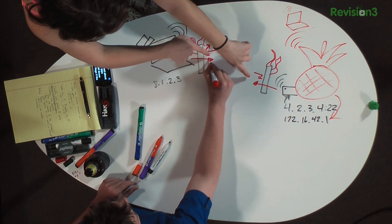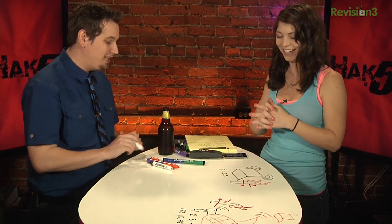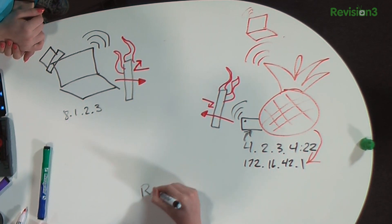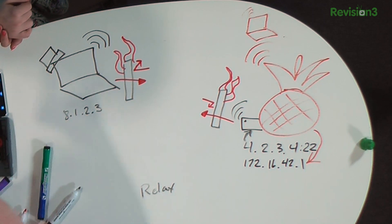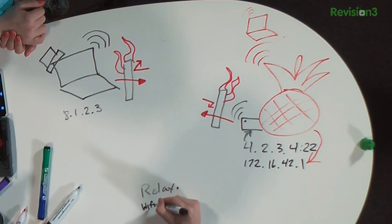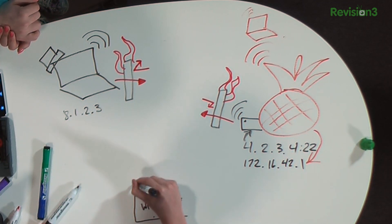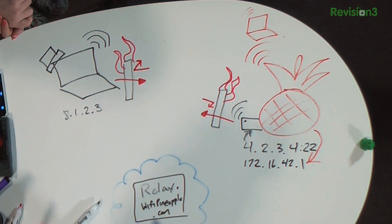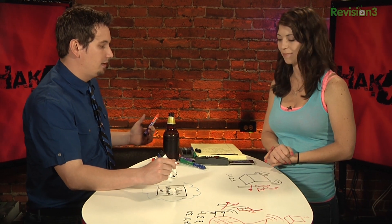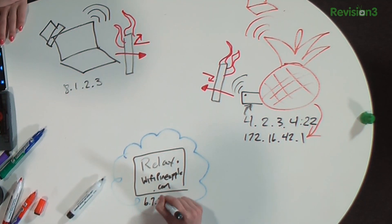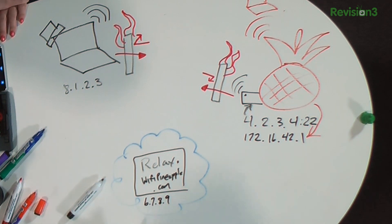So can these two arrows meet in the middle and say hello? They can — all we need is a relay. We have relay.wifipineapple.com. This is our virtual private server, just as we've been talking about before, chilling in the cloud. It's got a public IP address, let's say 6.7.8.9. We can both talk to this guy — that's what's really cool about this.